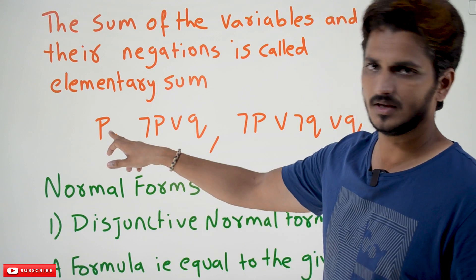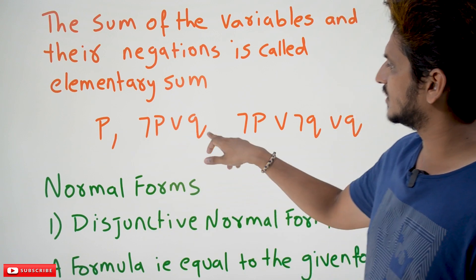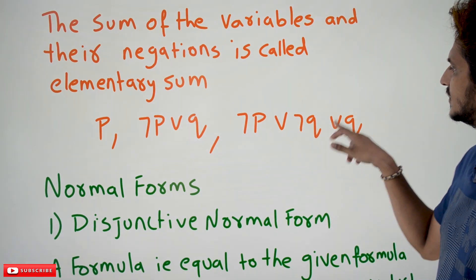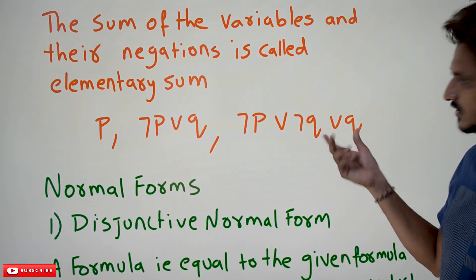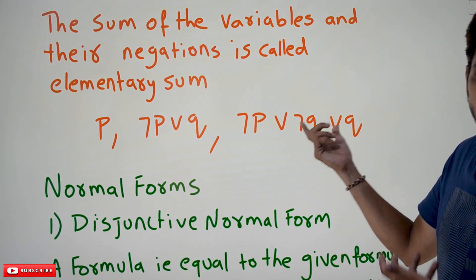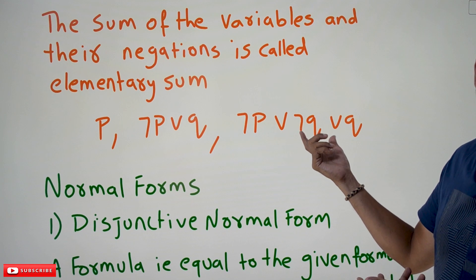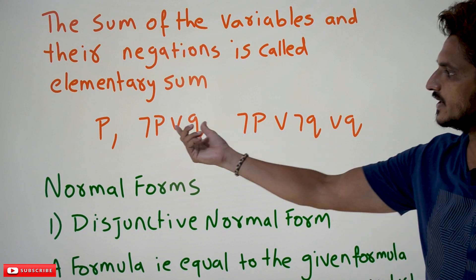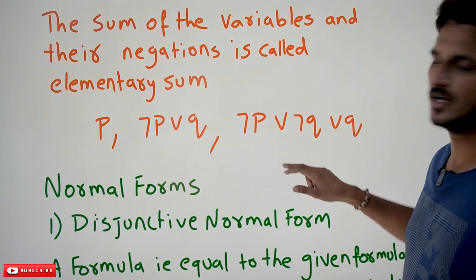For example: P, negation P disjunction Q, negation P disjunction negation Q disjunction Q — this is an elementary sum.